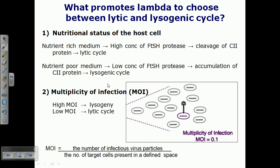Regarding nutritional status of the host cell: in a nutrient-rich medium, there is a high concentration of FtsH protease present, which can cleave the CII protein, leading to the lytic phase. In a nutrient-poor medium, there is low concentration of FtsH protease, so CII protein accumulates and the phage converts to the lysogenic cycle. More nutrition leads to lytic cycle; less nutrition leads to lysogenic cycle.